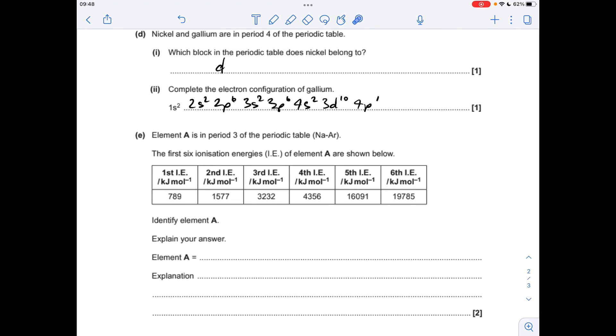And finally for part E, we've got to identify element A. It's in period 3 of the periodic table, so we're going to use the ionisation energies, the succession of ionisation energies, to see what group it's in. We're looking for where the first big jump up, or increase in ionisation energy is. So there it is there, between the 4th and the 5th ionisation energy. So these electrons here must all be in the outer shell, so it's in group 4, so it's silicon.